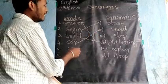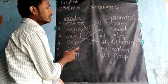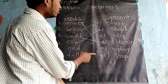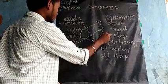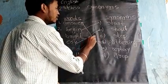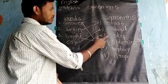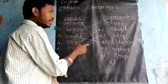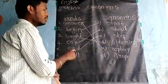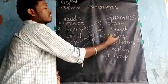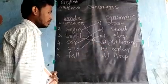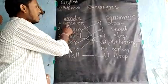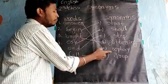Next, fifth one: end. End matches with stop — end to stop. And fall — drop: fall and drop match. So the answers are: reply, begin to start, bright to glittering, cry to shout, end to stop, fall to drop.